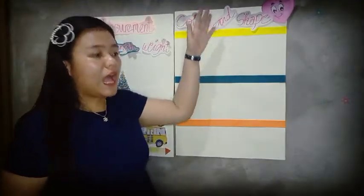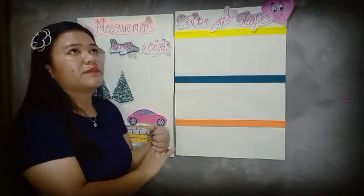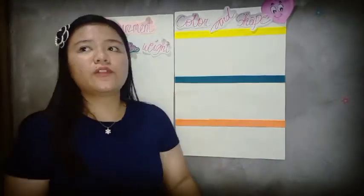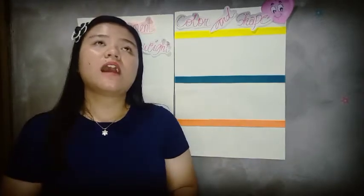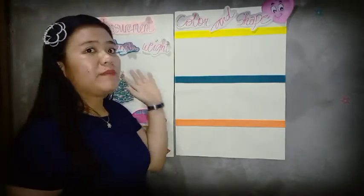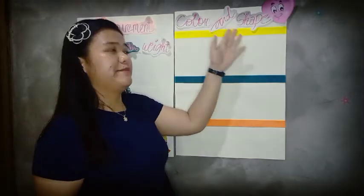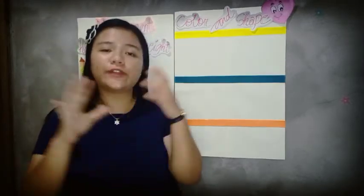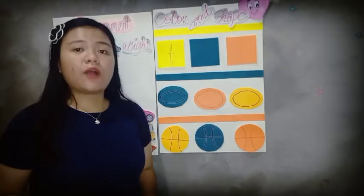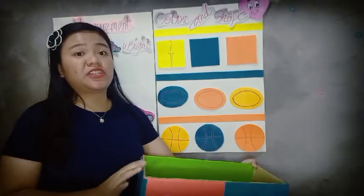Let's proceed to fill the rest of our attributes wall. We have covered measurement. We can also describe an object by its color and by its shape — what color they are and what shape they have.